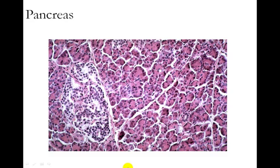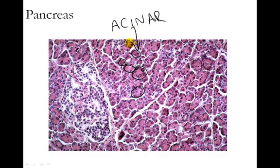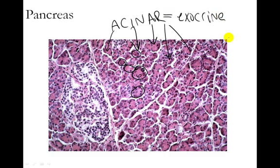If we look here, we're going to see a few different types of cells. First off, we see some very round cells that organize themselves in round orientations. In anatomy, we use the term acinar to mean round, so acinar cells are round cells. All of these stained in a reddish color in this particular image are the acinar cells of the pancreas. Those acinar cells are the exocrine cells of the pancreas, which secrete digestive enzymes — we'll talk about that in more detail in the digestive unit.